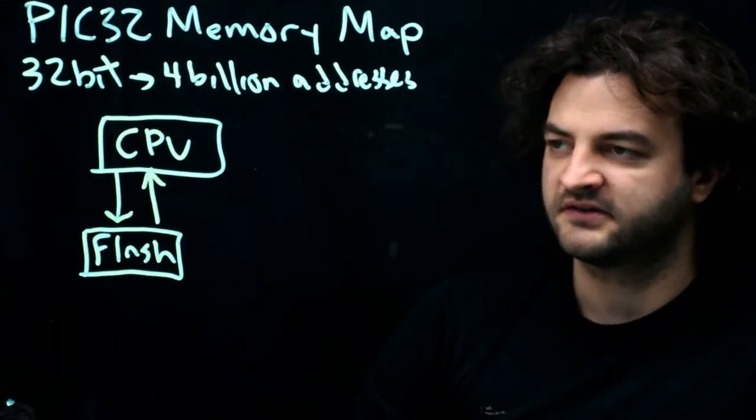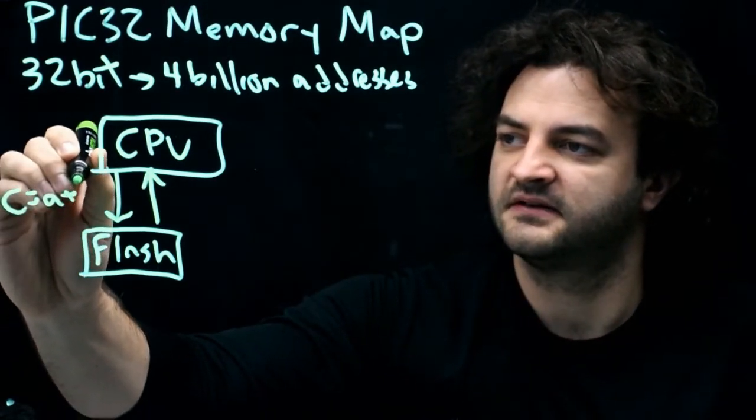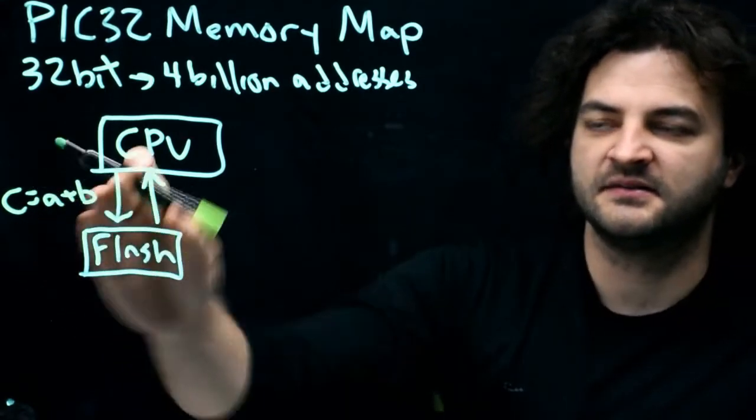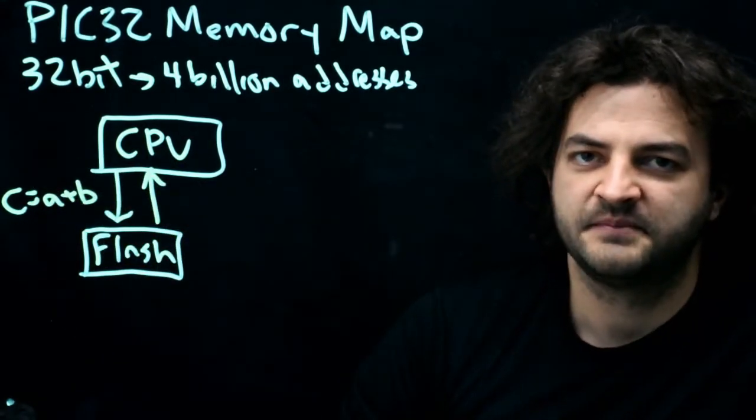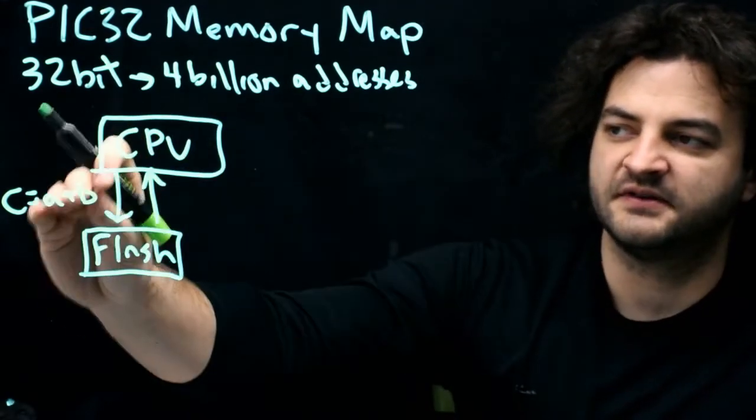Our code might look something like the variable C is equal to the variable A plus the variable B. So in C, that's a simple single line of code. But in machine code, in the assembly language, there's more specific steps that happen here.